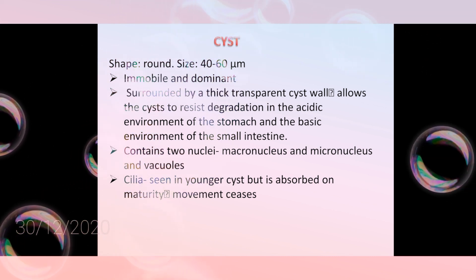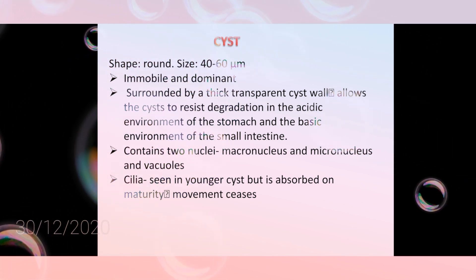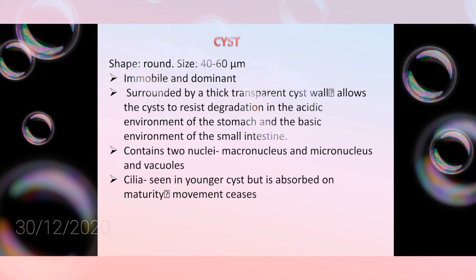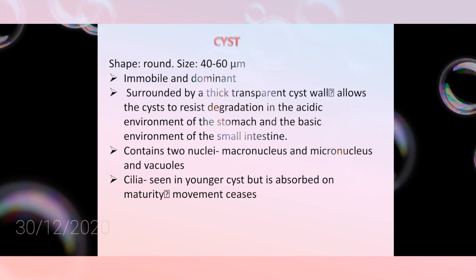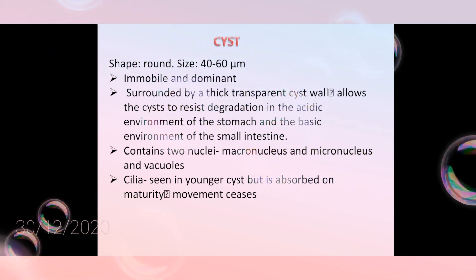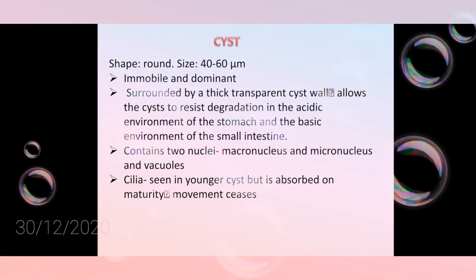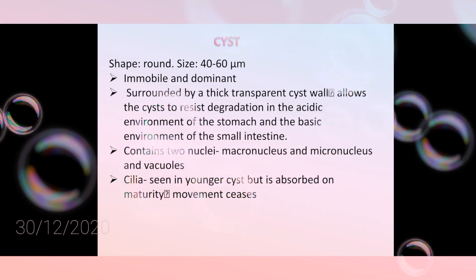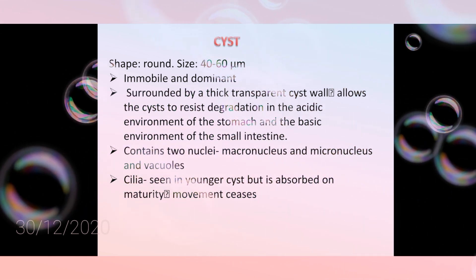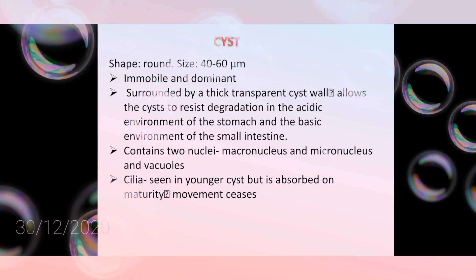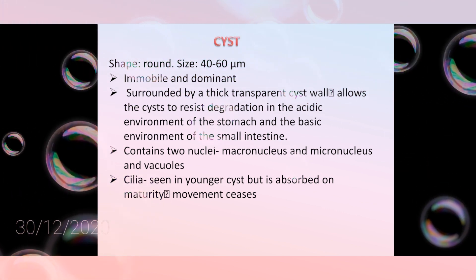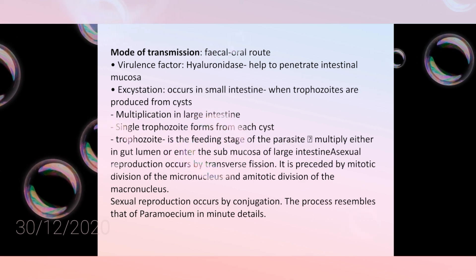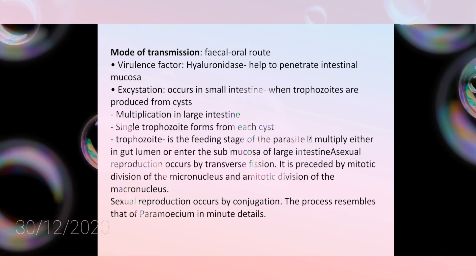The cyst is immobile and dormant, surrounded by a thick transparent cyst wall. It contains two nuclei — macronucleus and micronucleus — and vacuoles. Cilia are present in younger cysts but are absorbed on maturity. The mode of transmission is the fecal-oral route.